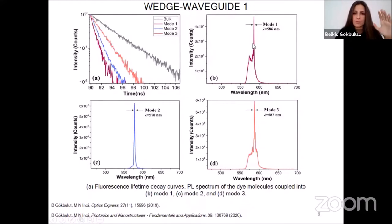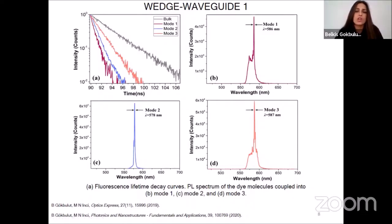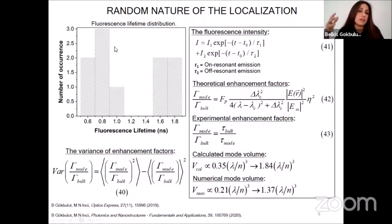The corresponding PL spectra of the dye molecules coupled into modes 1, 2, and 3 are also demonstrated. Each optical mode appears at a random spectral and spatial position within the actual spectral bandwidth of Rhodamine 6G dye molecules. To understand the random nature of the light localization in an entirely three-dimensional disordered waveguide medium, our time-resolved experiments based on the time-correlated single photon counting technique are performed systematically at least 10 times at the same conditions and using the same capillary tube. Each time, after the specific Anderson localized mode is obtained, its decay rate is recorded by our optical setup.